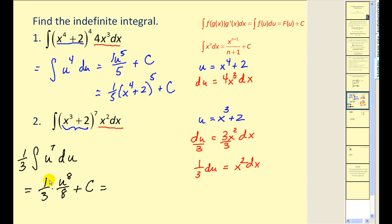And lastly, rewrite this in terms of x. So we'd have (1/24) times u^8, which is (x^3 + 2) raised to the eighth, plus c.